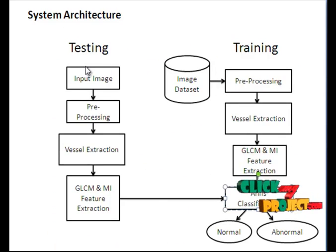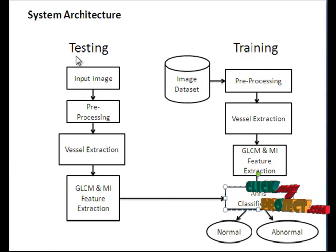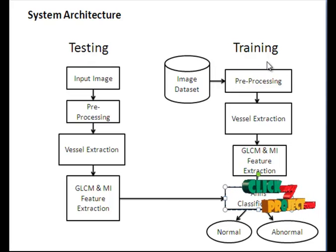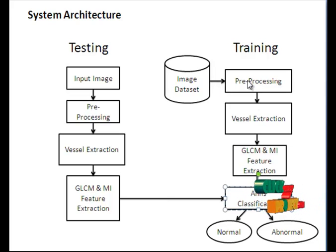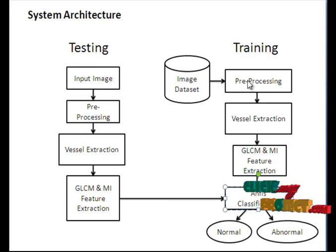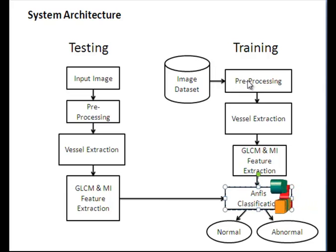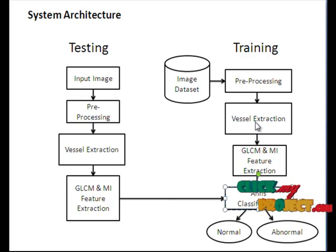This is the flow of our project. There are two stages: the training stage and the testing stage. In the training stage, we train on all database images. Each image goes through pre-processing, where the color channels — red, green, and blue — are separated. The green channel is then passed through vessel extraction.